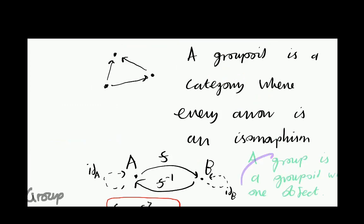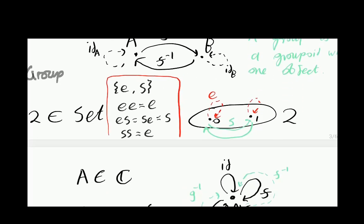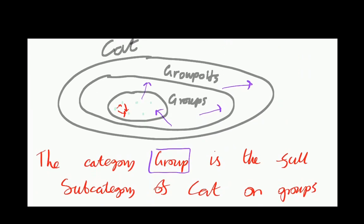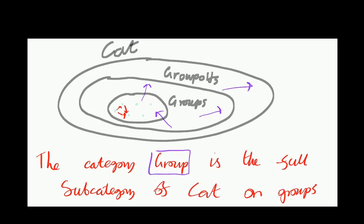I much prefer to think of groups in terms of the category. Another good thing about this perspective is that it gives us the notion of morphisms between groups for free. As you might have guessed, groups form a category called Group - its objects are groups and its arrows are group homomorphisms. A group homomorphism is just a function from the elements of one group to the elements of another group which preserves some of the group structure. This perspective automatically tells us what these group homomorphisms are.